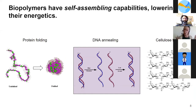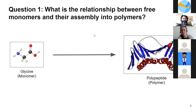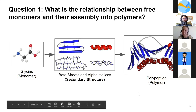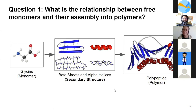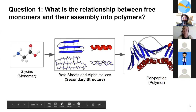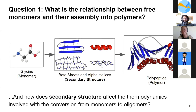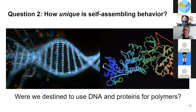We can bear this in mind as we hone in on our research question investigating this unexplainable transition. We have two questions for this project. The first is: what is the relationship between monomers and their respective polymers? Are there properties of these monomers that might allow us to predict if they can form biopolymers? And more specifically, we want to see how secondary structure might affect the energetics as well — secondary structures being the motifs found in large polymers. The second question: how unique is this self-assembling behavior? In other words, were we always destined to use DNA and proteins for our biopolymers, or were those just frozen accidents chosen out of thousands of possibilities?